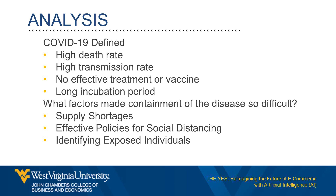What factors make containment of the disease so difficult? One is supply shortages. Many governments, including China, faced supply shortages amid the pandemic, resulting in healthcare workers and other citizens unable to access sufficient personal protective equipment, or PPE, to shield themselves from the virus. This supply shortage was caused by both a surge in demand and waning supply due to disruption across global supply chains.